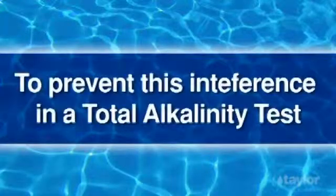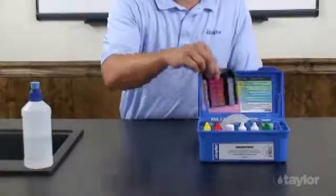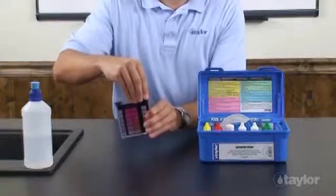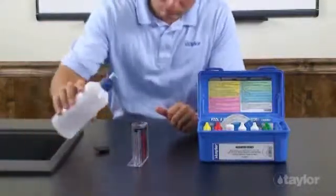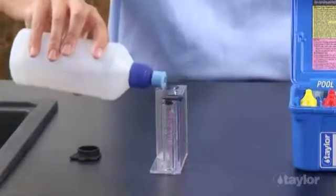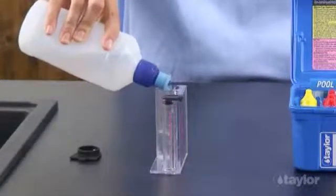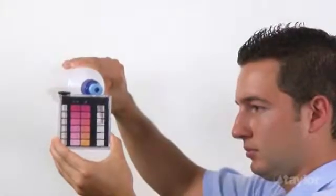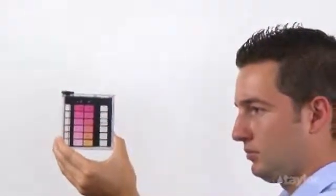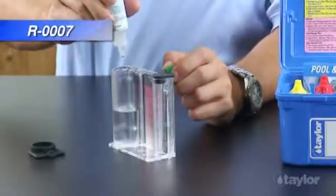To prevent this interference in a total alkalinity test, retest by adding one additional drop of reagent 7 in step 2, for a total of three drops of thiosulfate. Rinse and fill the large comparator tube to the 25 ml mark with the water to be tested. Add three drops of reagent 7 to neutralize the sanitizer residual.